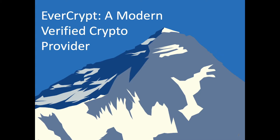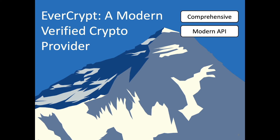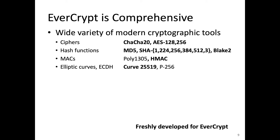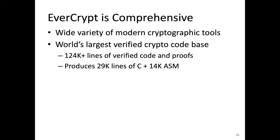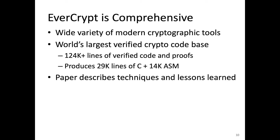This state of affairs is what motivated us to develop EverCrypt. EverCrypt aims to be comprehensive, so that it can support all of your cryptographic needs. It offers a modern API designed to reduce developer errors and adapt to changes in the cryptographic landscape, and crucially, it was developed from the start with performance in mind. As a result, we have developed the world's largest verified crypto code base — over 124,000 lines of code and proof — which compiles to a substantial amount of C and assembly code.